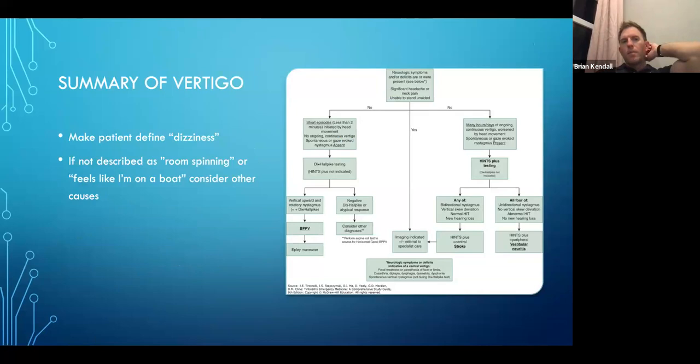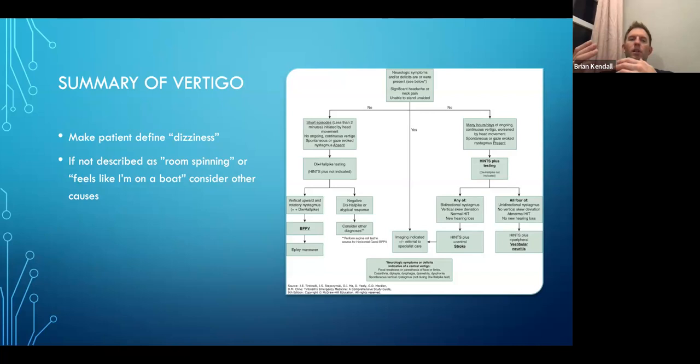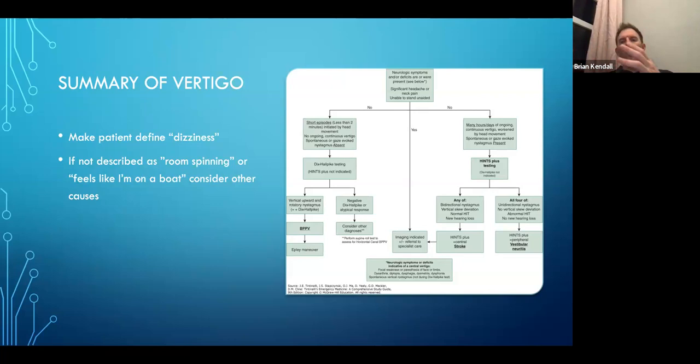Summary of vertigo: make the patient define their dizziness. If they don't describe it as room spinning or feeling like they're on a boat, consider other causes. If they describe feeling like they're going to pass out, go down the cardiac pathway — troponin, EKG, chest x-ray, orthostatic blood pressures. If it is true vertigo, start thinking through the decision tree: is it prolonged or not? That will really help you be more comfortable figuring out the diagnosis.